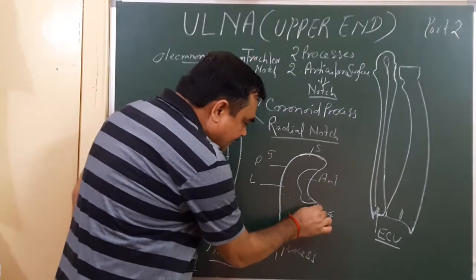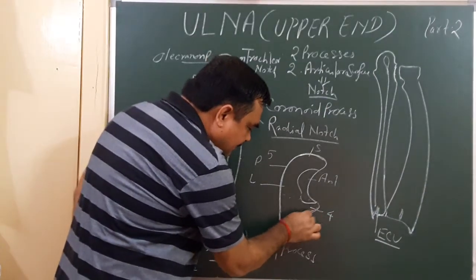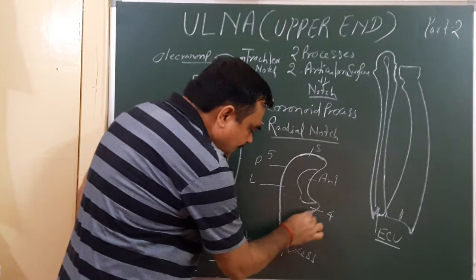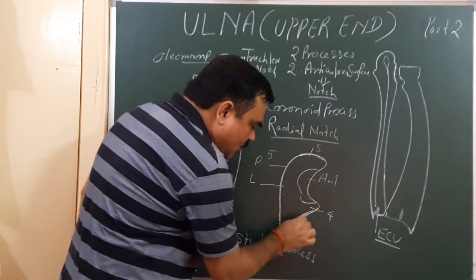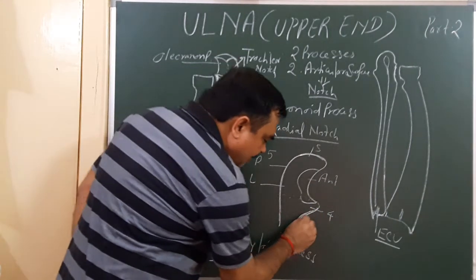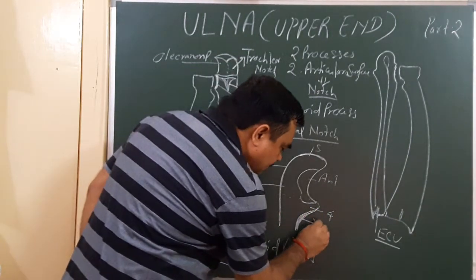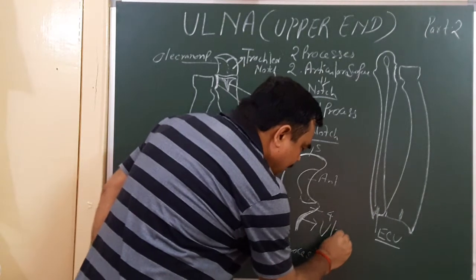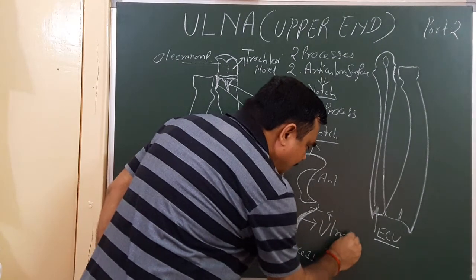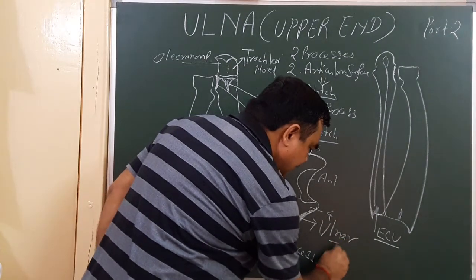Here is the inferior surface of the coronoid process. This inferior surface forms a tuberosity known as the ulnar tuberosity.